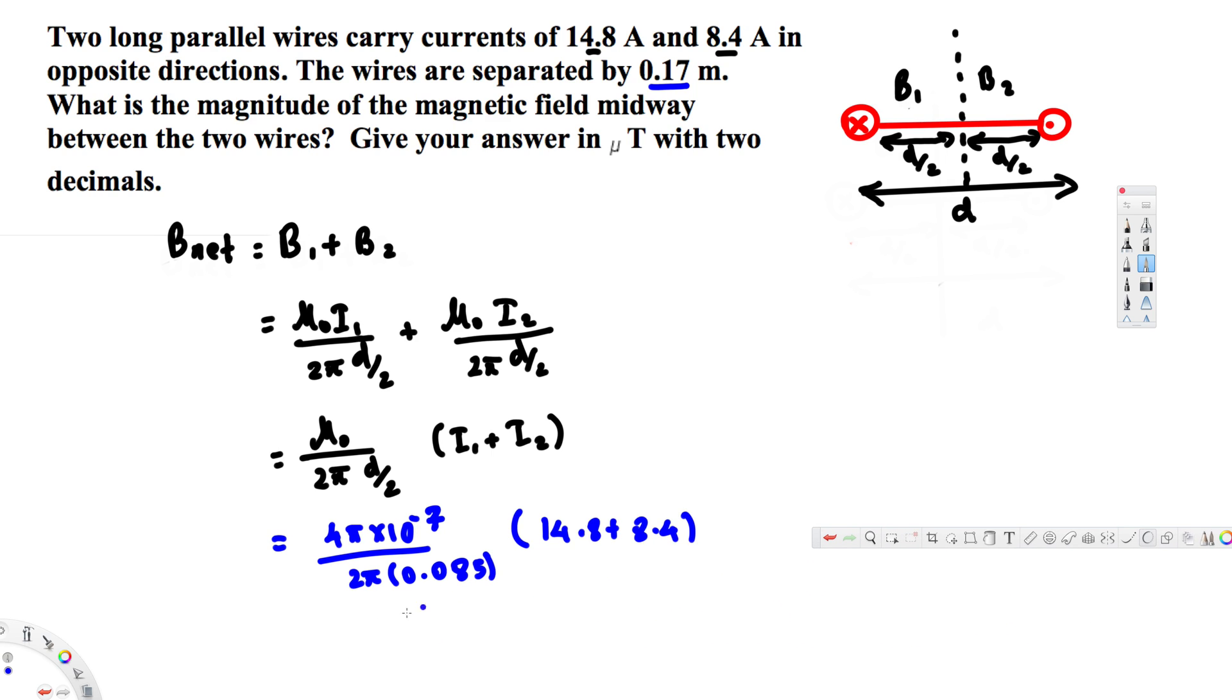And if you calculate this you will get 545.8823 times 10 to the power minus 7 tesla. But the question is asking to give it in micro tesla, so we have to write it in 10 to the power minus 6. So this is going to become 54.59 times 10 to the power of minus 6 tesla.